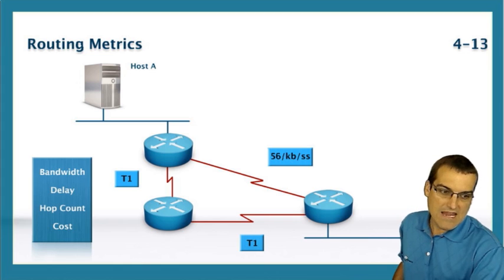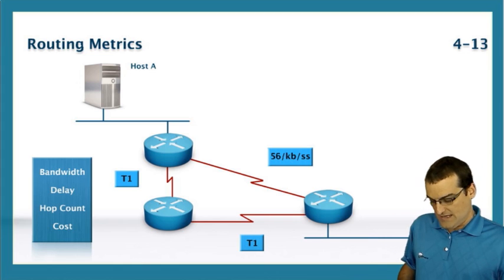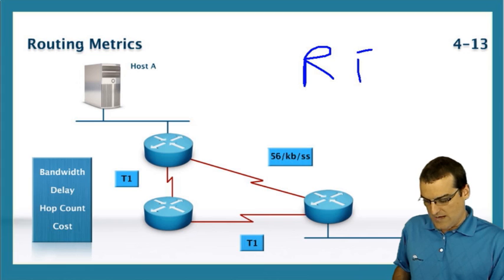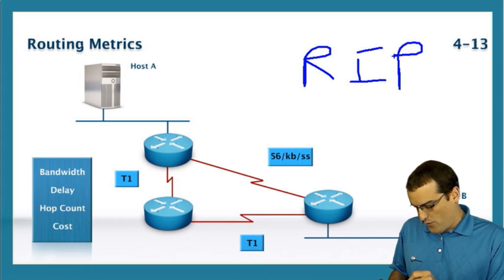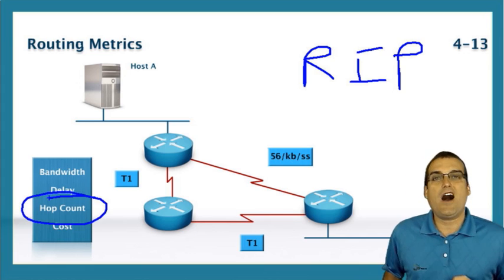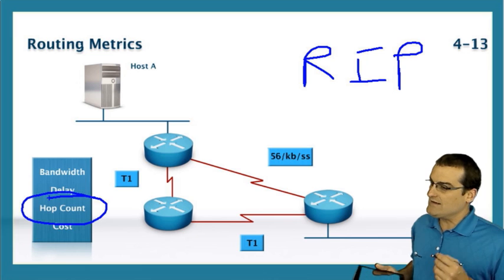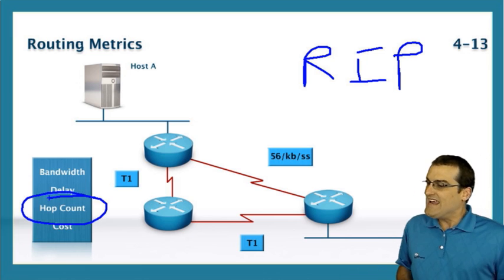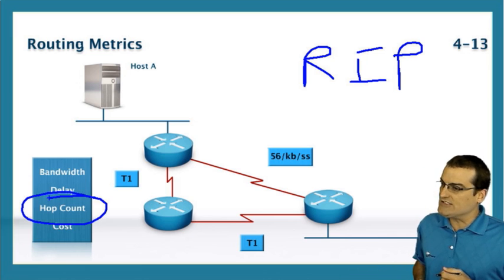For example, if we look at the Routing Information Protocol, or RIP, we know that RIP will use a simple hop count when it utilizes its metric decision. In this particular topology,